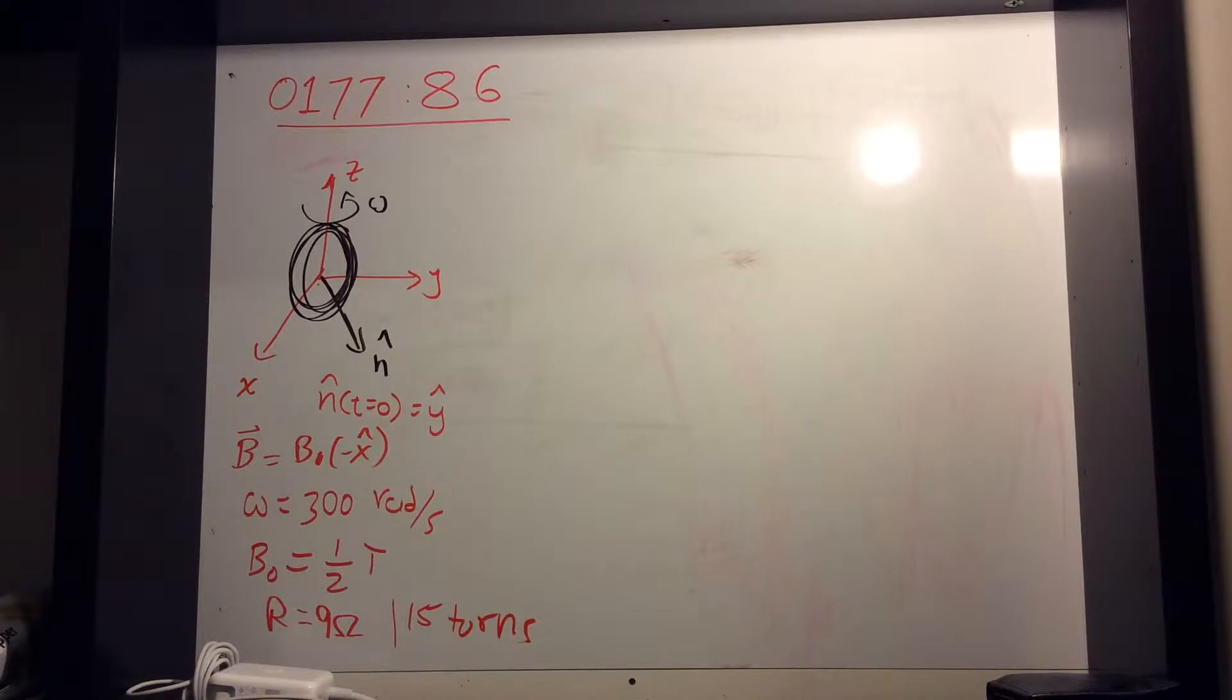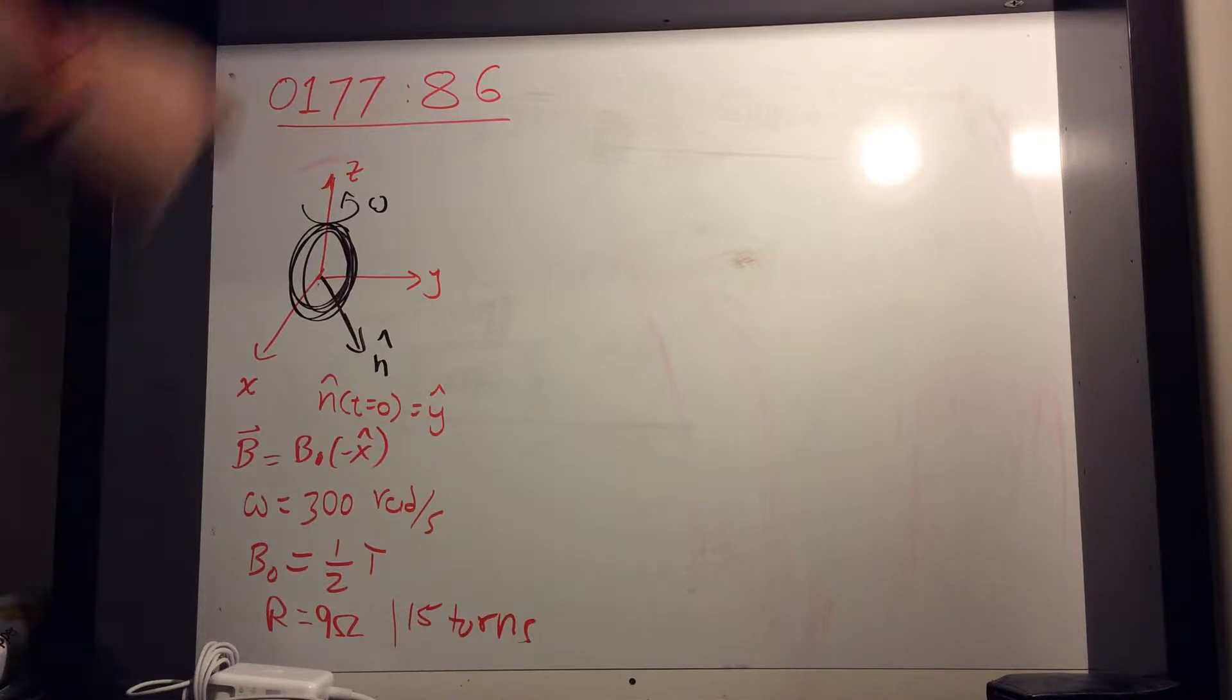Now it's asking you to find the current that flows through the loop. So conceptually, we know that changing magnetic field produces electric, and changing electric produces magnetic.